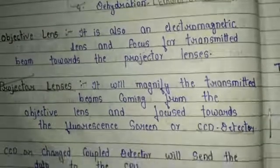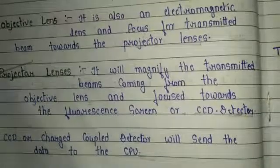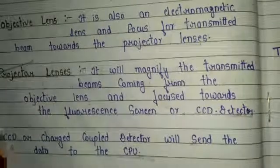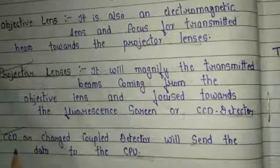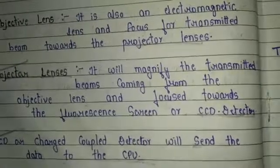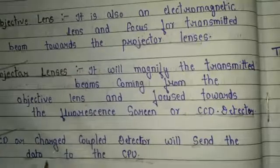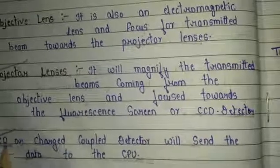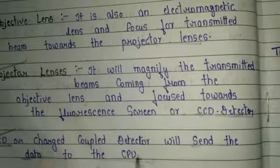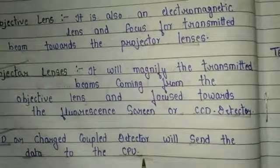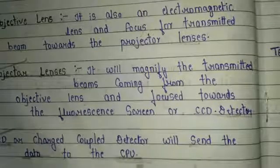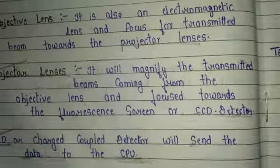So what is the CCD detector? It is a charge-coupled detector that will send the data to the CPU. This is the final stage where we get our image and this data is sent from the CCD detector to the CPU. These are the important parts of that instrument.